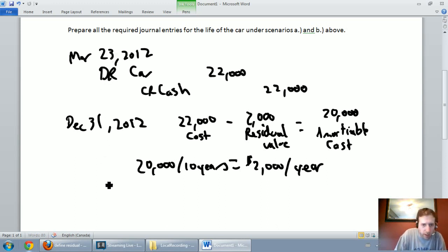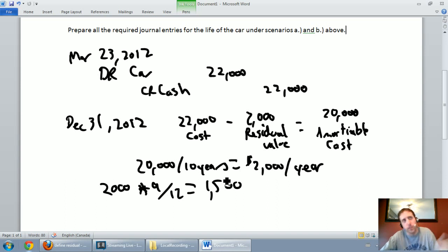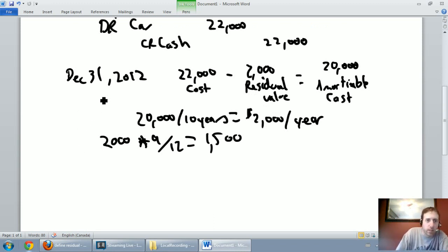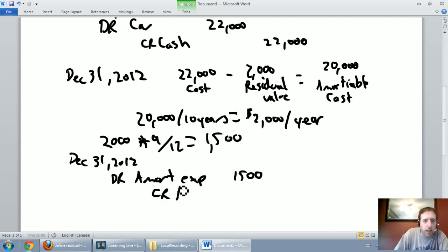So we're going to do nine months' worth of amortization. We have this $2,000 asset. We want to amortize it for nine of the 12 months of the year. $2,000 times 9/12 is $1,500. So our amortization for the nine months between when I bought the car and my fiscal year end is $1,500. I'm going to debit amortization expense $1,500 and credit accumulated amortization on the car $1,500.